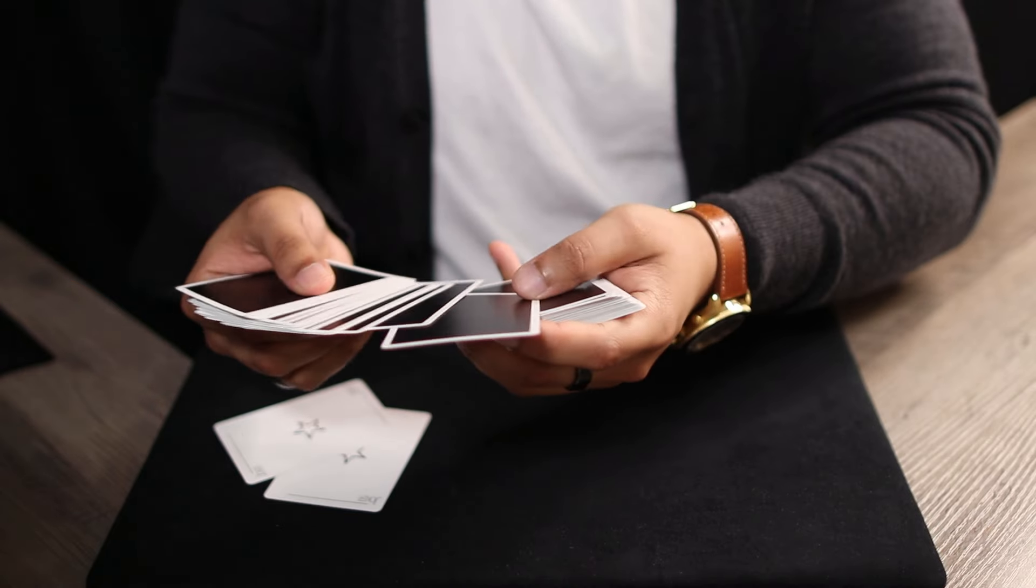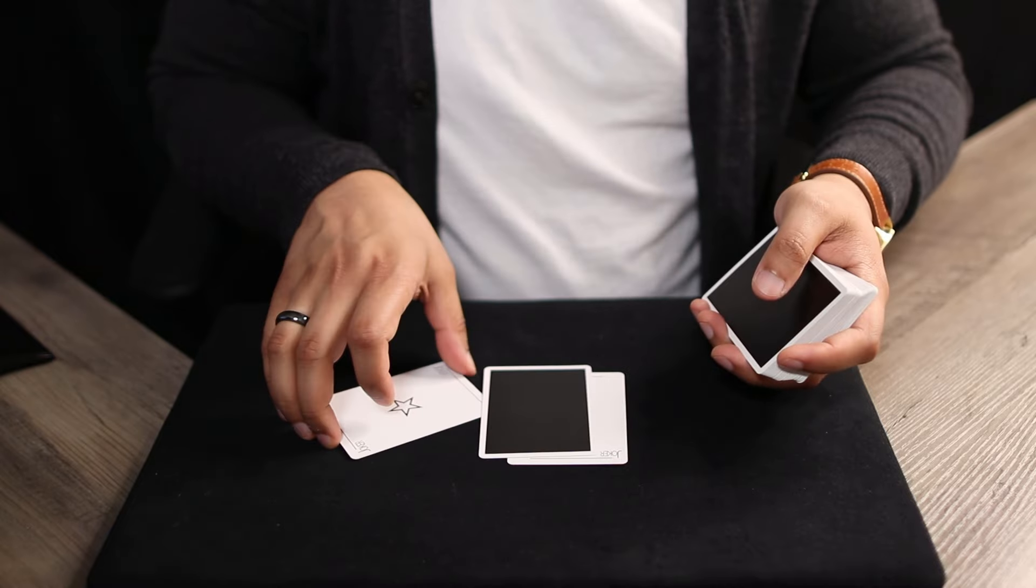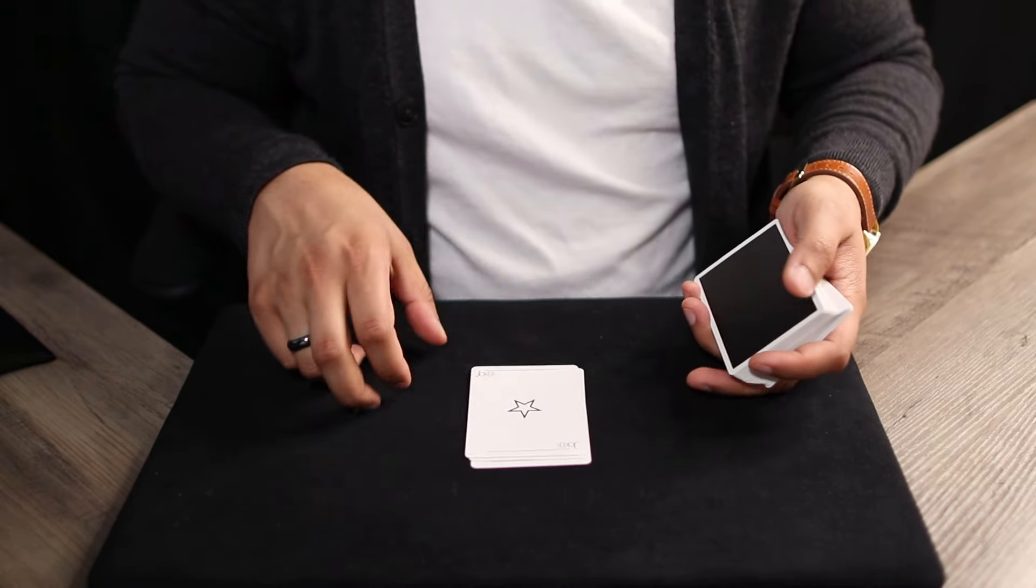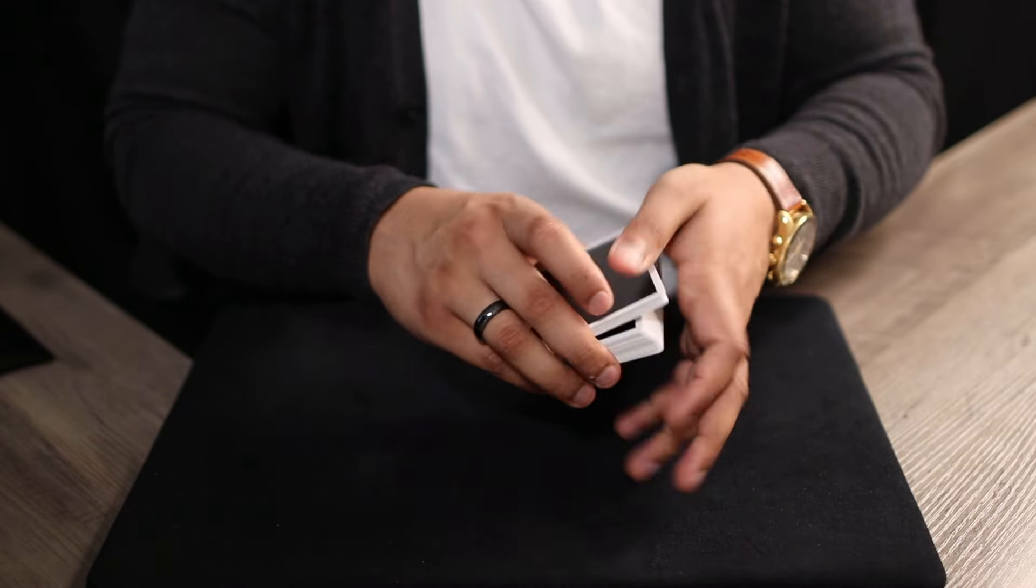So spectator number one, I'm going to have them select a card. Let's just say it's the four of diamonds. It doesn't really matter if I see it. I'll put it sandwiched between these two jokers face down, and then we'll lose these two jokers somewhere in the center of the deck as well.